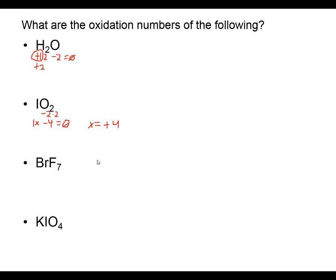If I have bromine heptafluoride BrF₇, we have a rule for fluorine but not for bromine. When fluorine is in a compound, it has a negative one oxidation number. Since there are seven fluorines, the total oxidation number for all the fluorines is a negative seven.